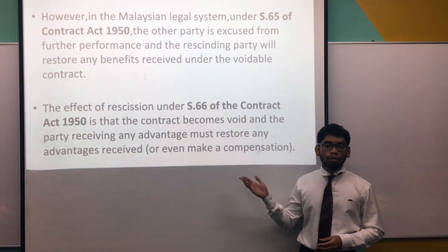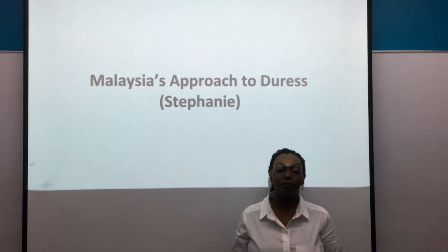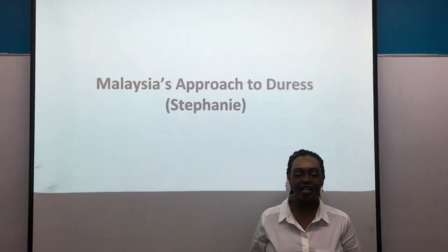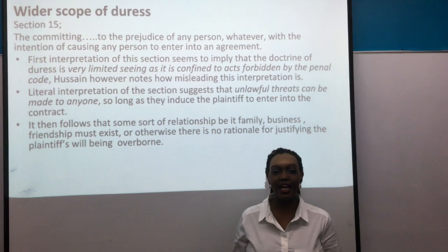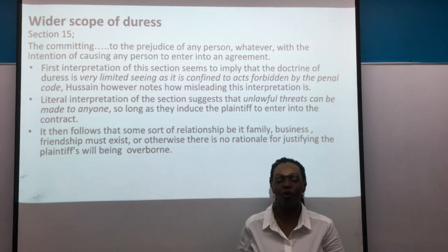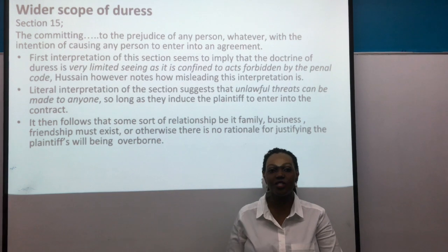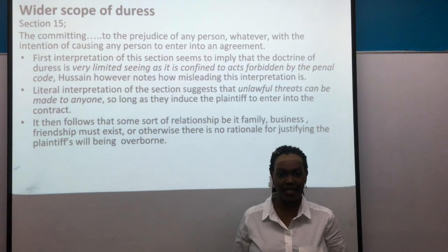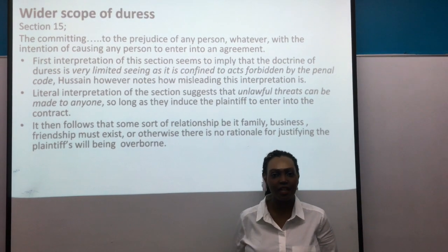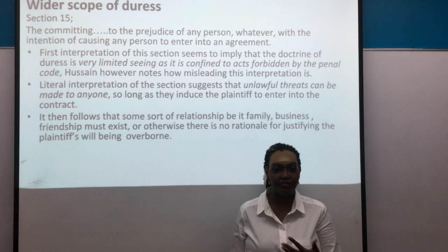Stephanie will now clarify Malaysia's approach to duress further. Moving on to further distinctions: in Malaysia, duress under Section 15 covers a wider range than common law duress. A notable distinction identified by Hussein is that prejudice can be made to any person — a literal interpretation meaning that unlawful threats may be administered to the plaintiff himself or to any third party. There need not be a pre-existing relationship of friendship or family.